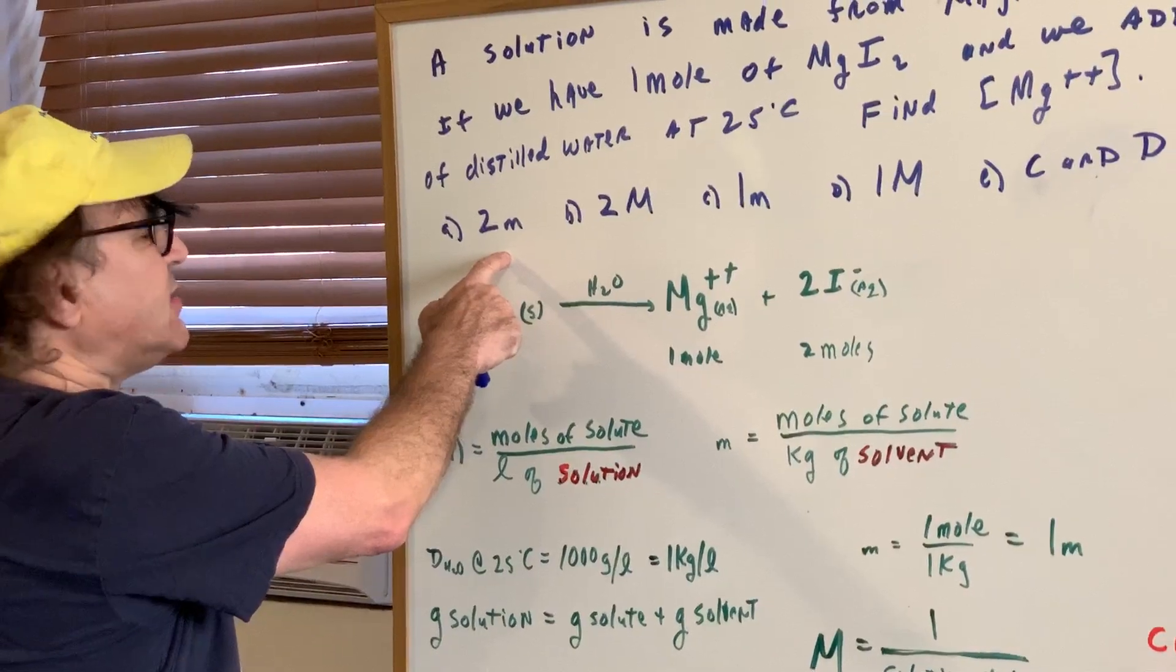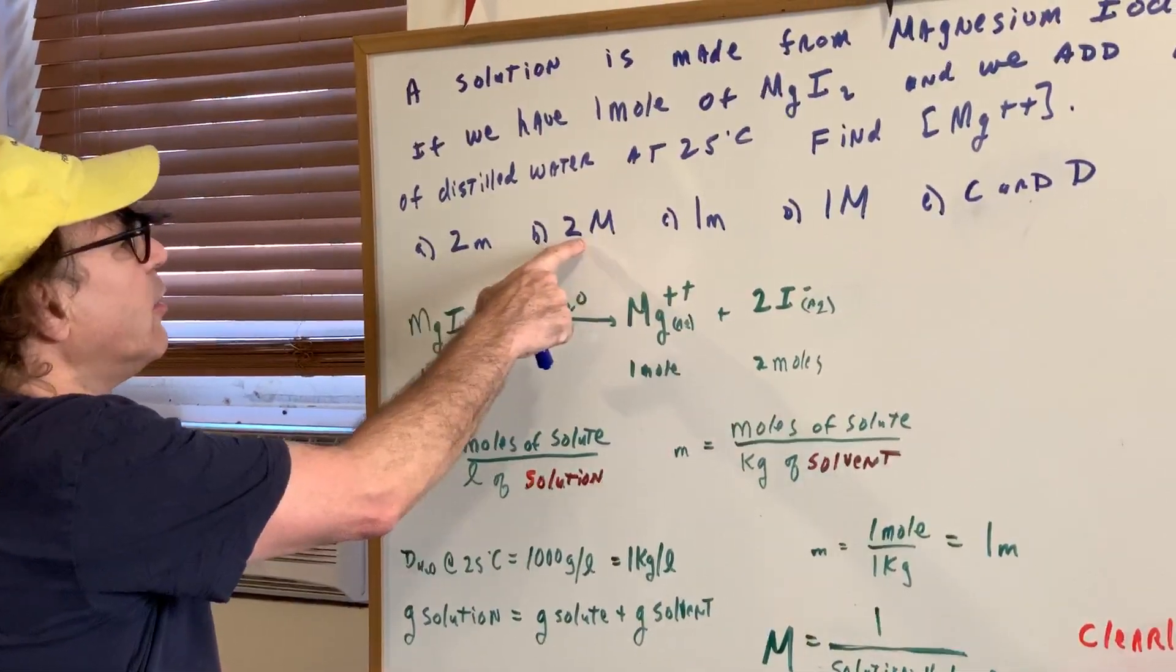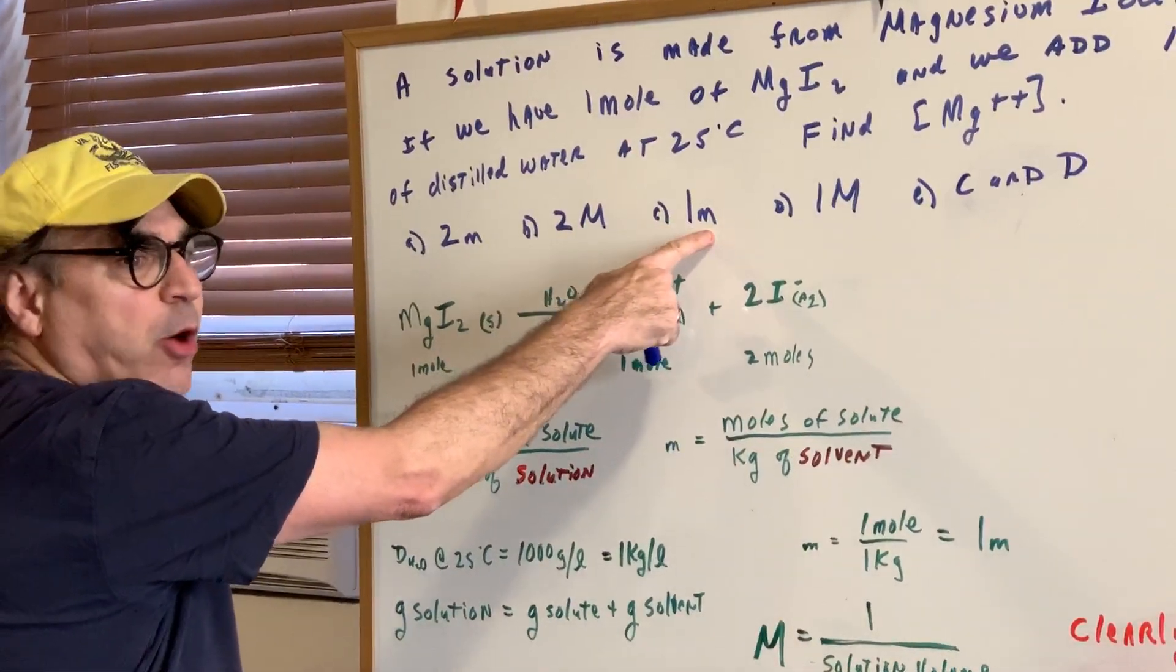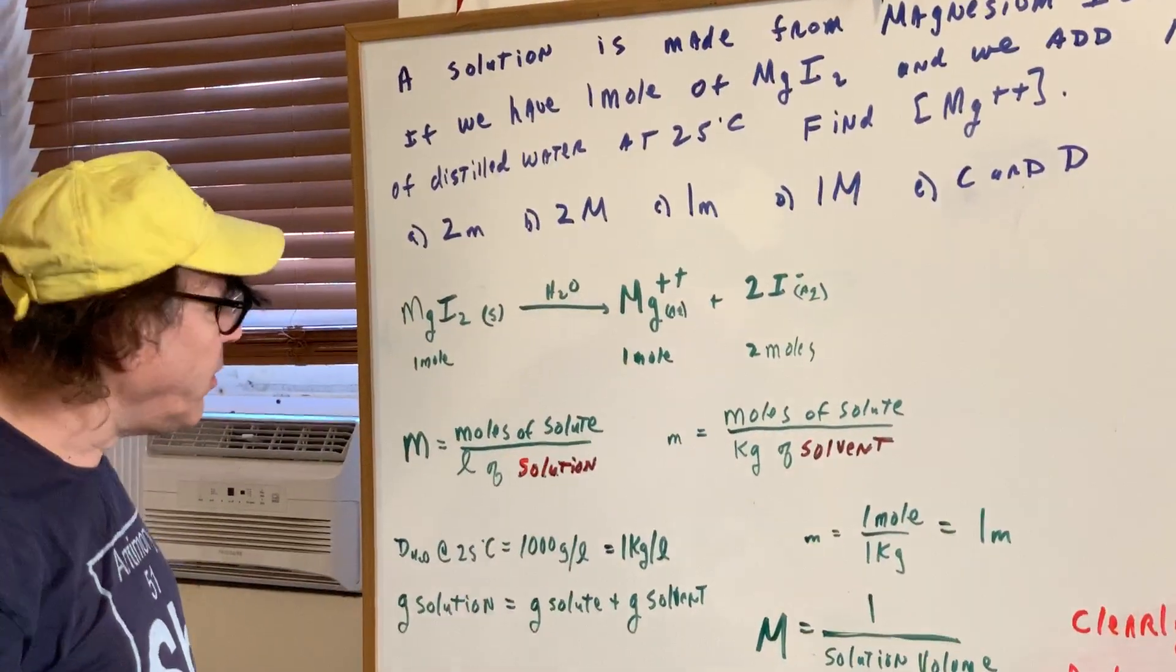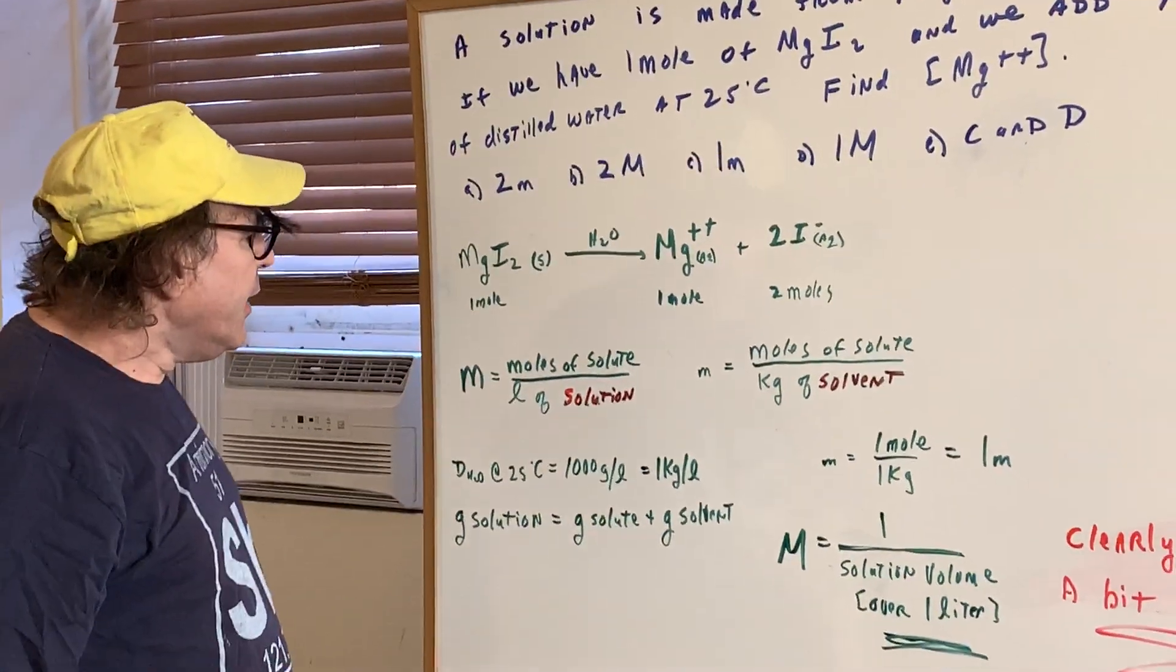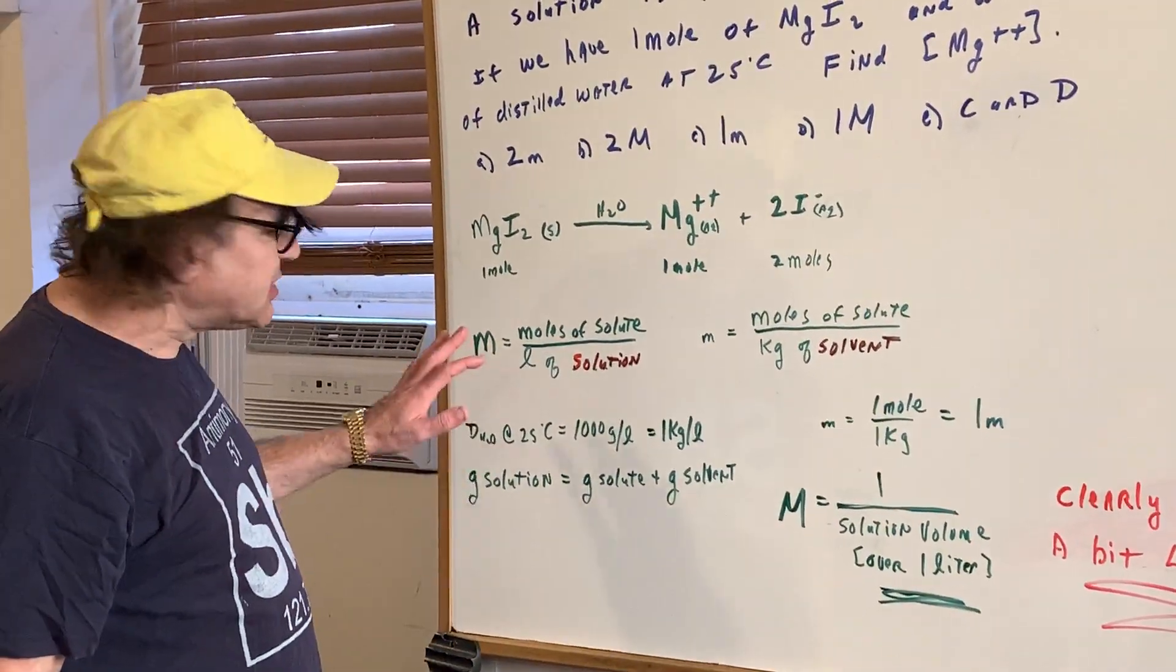Now we got some choices here. Two molal, two molar, one molal, one molar, or C and D are both applicable and correct. You got to be very careful here. This is subtle.